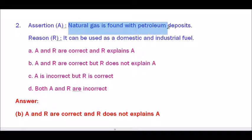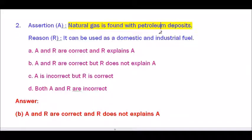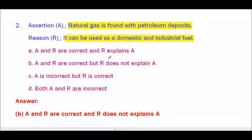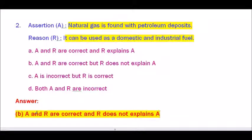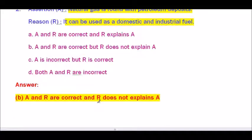Question number 2 — Assertion: Natural gas is found with petroleum deposits. Reason: It can be used as a domestic and industrial fuel. Options: A) A and R are correct but R does not explain A. C) A is incorrect but R is correct. D) Both A and R are incorrect. The answer is A and R are correct but R does not explain A.